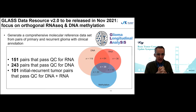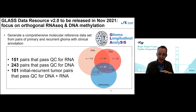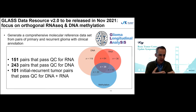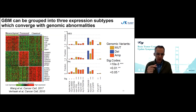As GLASS progresses, we are gearing up to release our second data resource. That second data resource has already been released to the consortium with a 12-month moratorium, released inside the consortium in November of 2020 — meaning it will be released publicly in November of 2021. In this second release, we've focused not so much on increasing patient numbers but on increasing orthogonal datasets. We've established a large number of parallel RNA sequencing data sets as well as DNA methylation data sets.